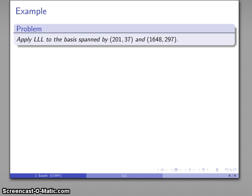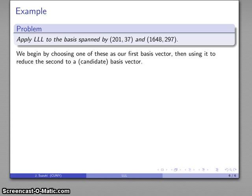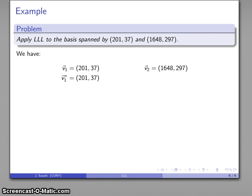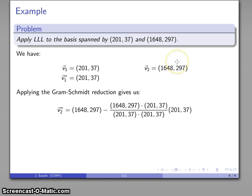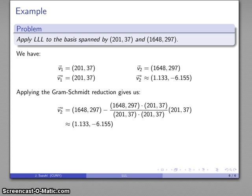We've already solved this problem using Gaussian reduction, so it would be nice to get the same answer using the LLL algorithm. We'll choose [2, 137] as our first basis vector and reduce the second vector. We start by finding the Gram-Schmidt orthogonal basis: the first Gram-Schmidt vector is our first vector, then we reduce the second vector by subtracting its projection onto the first, giving us [2, 317] approximately as our second Gram-Schmidt vector. So we have our first Gram-Schmidt vector and an approximately orthogonal V1, giving us our Gram-Schmidt basis.